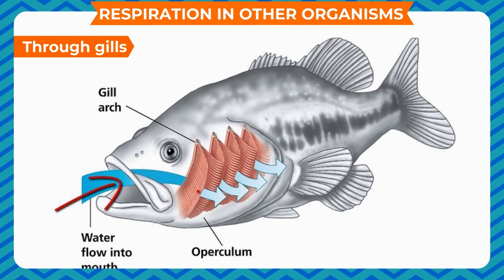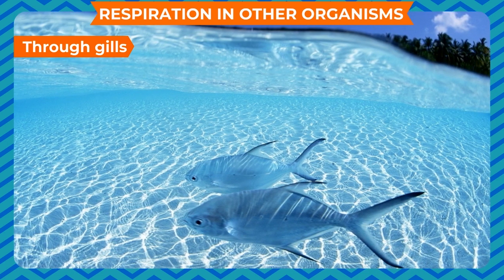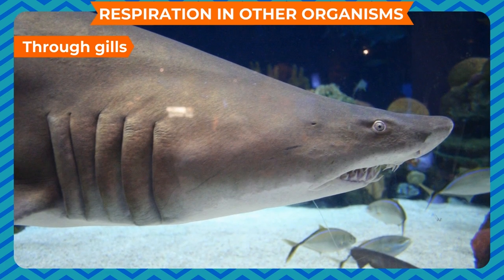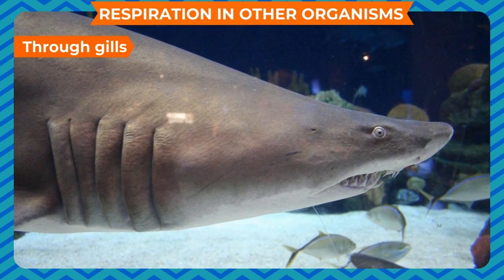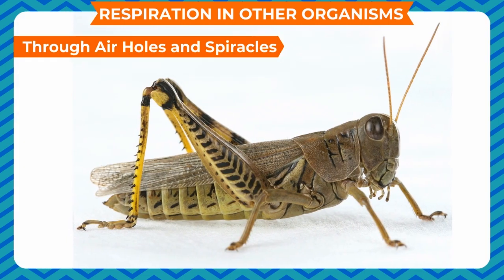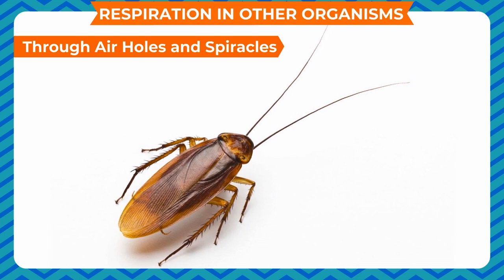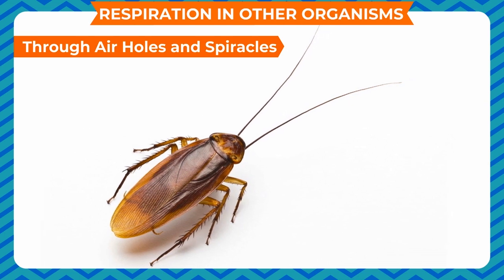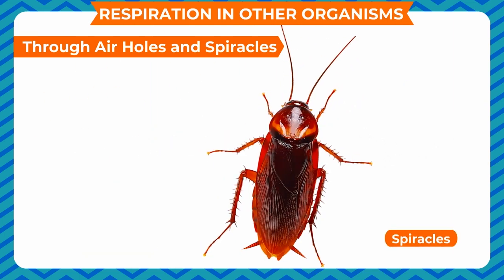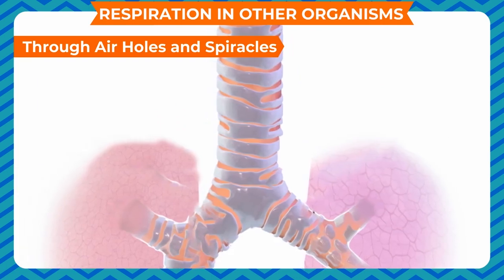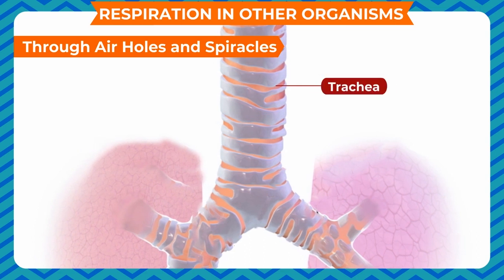Most aquatic animals use gills for breathing. Gills resemble the teeth of a comb. Water enters the mouth and flows over the gills, which take in the oxygen dissolved in water. Insects like cockroaches breathe through fine holes present on the sides of their body called spiracles. Air enters through these holes and reaches the cells through a fine network of thin tubes called trachea or breathing tubes.